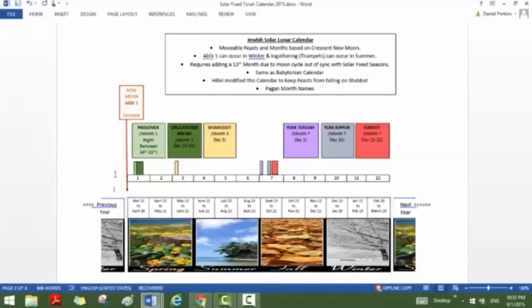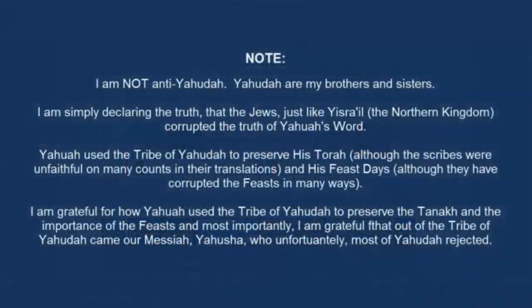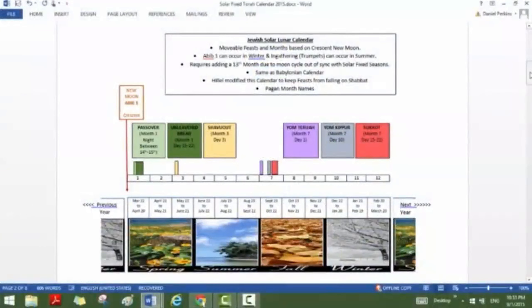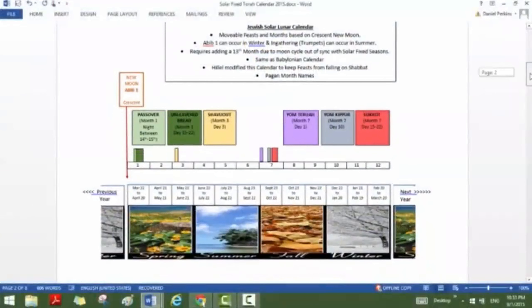Those are the problems with the Jewish solar lunar calendar. People follow it because they're coming out of Christianity, willing to give up their holidays, and the only people they can look to are the Jews. Not having studied Torah ourselves, we look to people — and we look to rabbis who have rejected Yahusha, who have created the man-made religion of Judaism. We are not to add to or subtract from Torah. Following the Jewish solar lunar calendar is, in my opinion, an absolute violation of Torah.